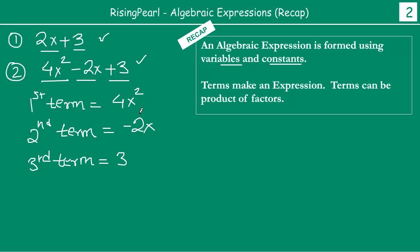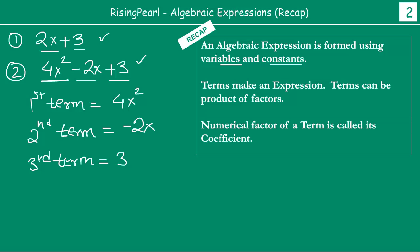So your first term 4x squared is nothing but 4 multiplied by x squared. The second term is again minus 2 multiplied by x. The third term basically is a product of only one term, which is number 3.